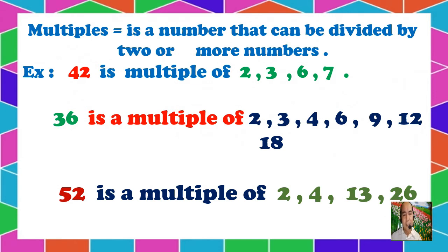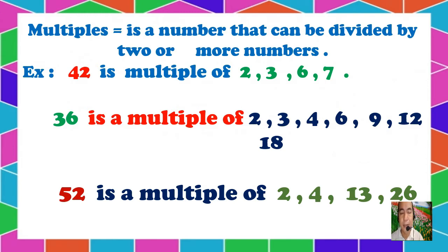First example, we have 42. 42 is a multiple of 2, 3, 6, and 7. Why do we say that it is a multiple of 2, 3, 6, and 7? It's because 42 can be divided by 2 exactly without remainder. You can also divide 42 by 3 without remainder. 42 is still divisible by 6 and divisible by 7. Therefore, 42 is a multiple of 2, 3, 6, and 7.